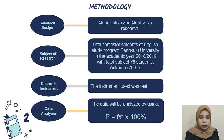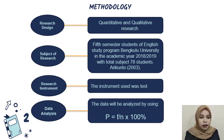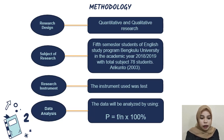Because according to Arikunto (2003), if the subjects are less than 100, it will be better to take all the subjects. The research instrument used was a test, and the data were analyzed by using the formula P equals F over N, multiplied by 100%.